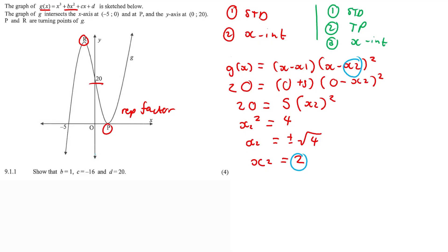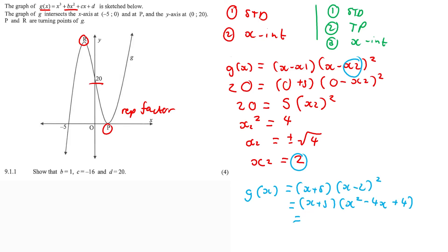We substitute x₂ = 2 in and expand to get the standard form of the cubic function. Foil out the brackets — one of my grade 8 private students likes to call it the rainbow method, since x times x², x times −4x, x times +4 makes a little rainbow shape when you draw the connections.